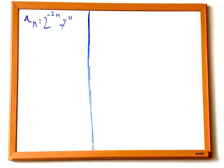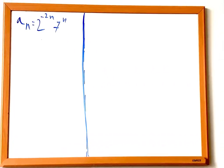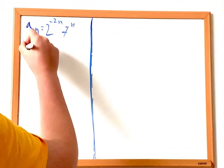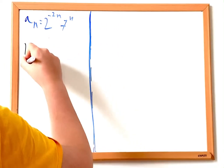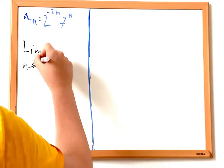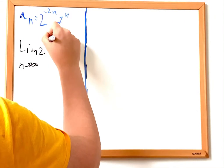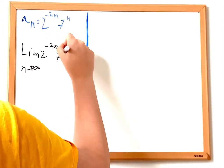The first thing we should do to find if a sub n converges or diverges is to take the limit as n approaches infinity of a sub n, which is 2 to the power of negative 2n multiplied by 7 to the power of n.